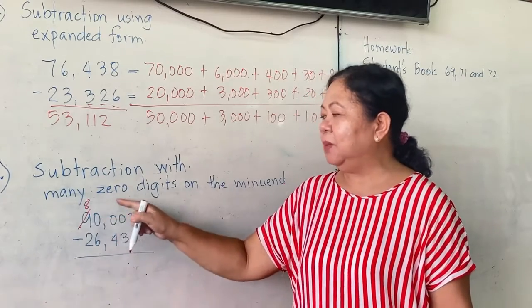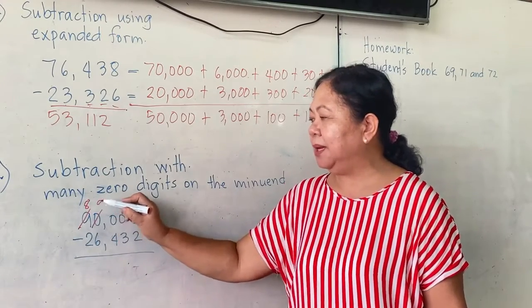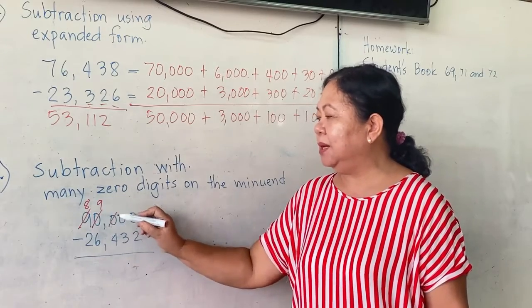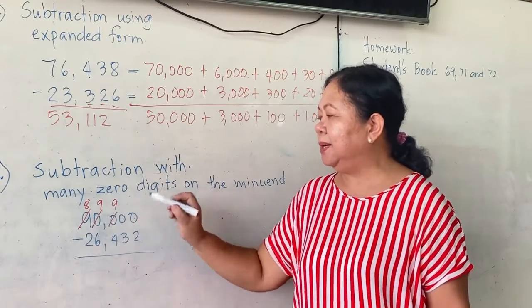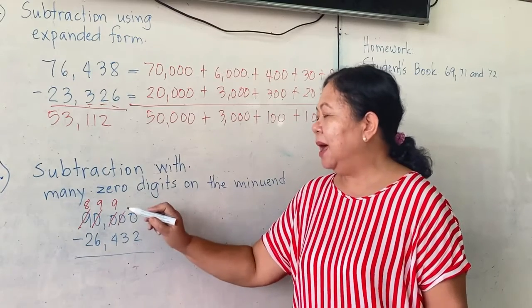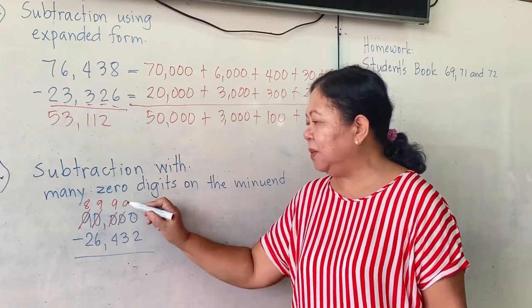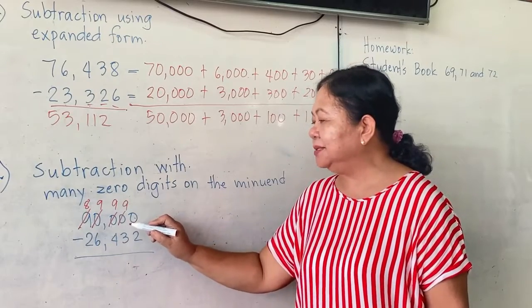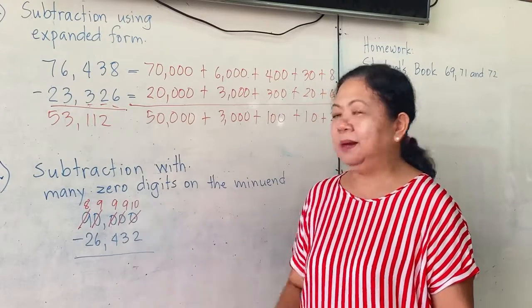This becomes 10, but we'll give 1 here, so it will become 9. This will become 10, and we'll give 1 here, so it will become 9. This becomes 10, and we'll give 1 here, so it will become 9. And the last is 10.